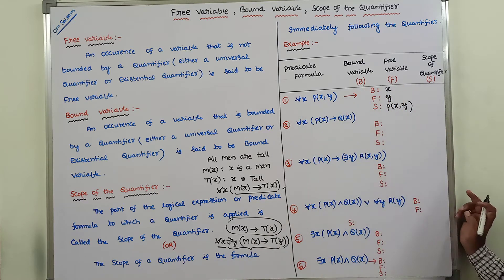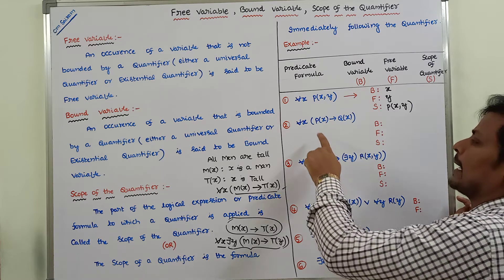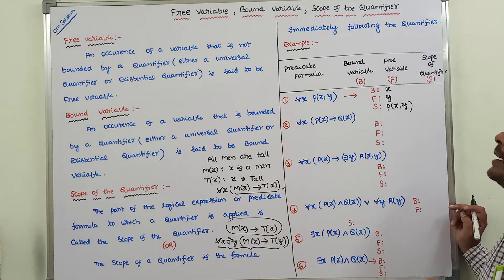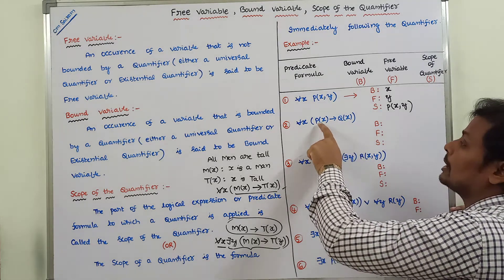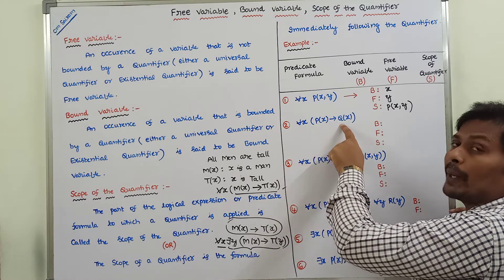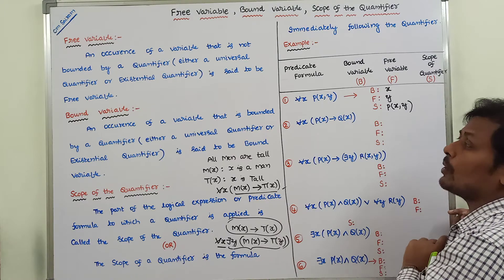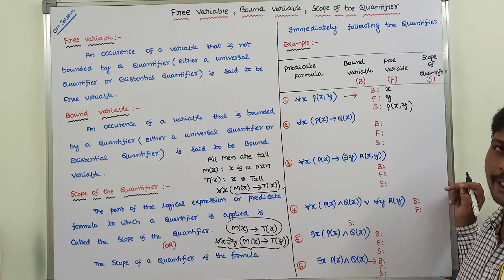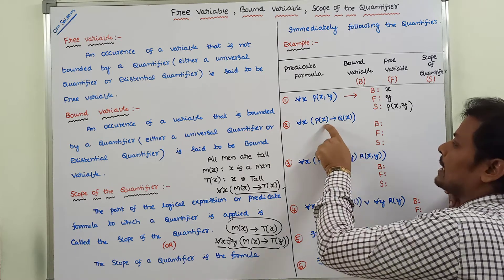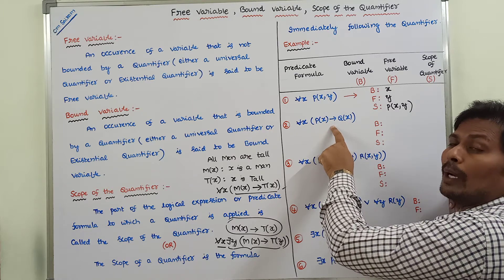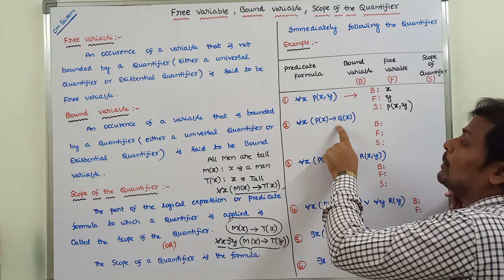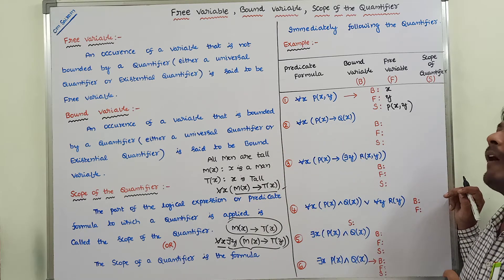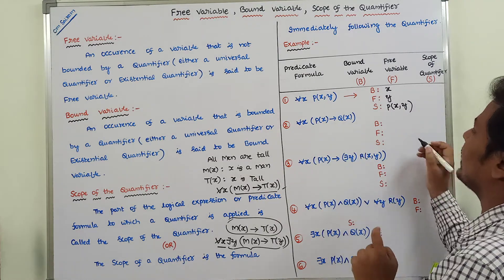Now for the second example: for all x, P(x) → Q(x). Here P is the predicate belonging to variable x, and Q is the predicate belonging to variable x. This entire formula is associated with the universal quantifier. The only variable occurring in the formula is x, and x is bounded with the universal quantifier — for all x.